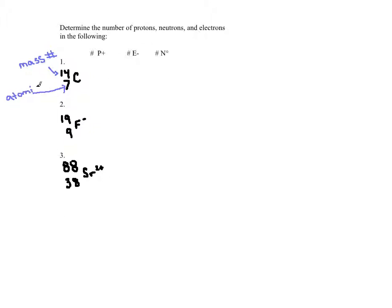For this problem, this should be nitrogen. So let's actually do this problem. Since my atomic number equals my number of protons, my number of protons is going to be 7.